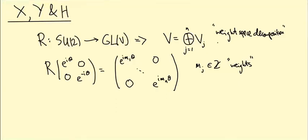There is a decomposition of V as a direct sum from j equals 1 to n of V_j, where each V_j is one dimensional.